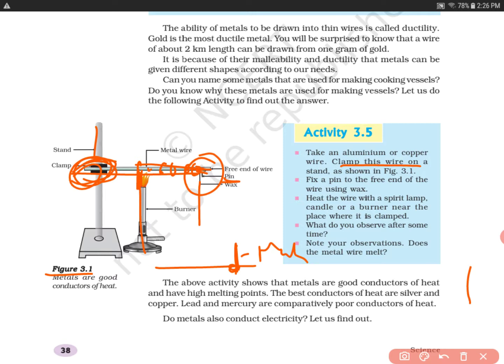The above activity shows that metals are good conductors of heat and have high melting points. Does the metal wire melt? No, the metal wire will not melt. The wax will melt. We must know that metals are good conductors of heat and the melting point is high. The metal wire will not melt because the melting point of wax is low, while the metal wire's melting point is high.